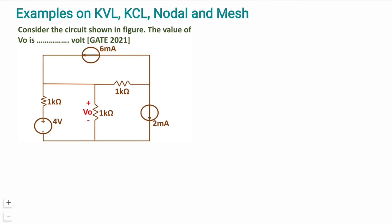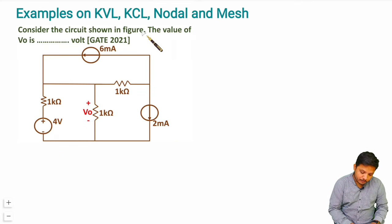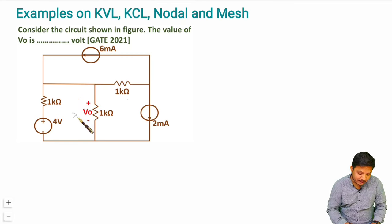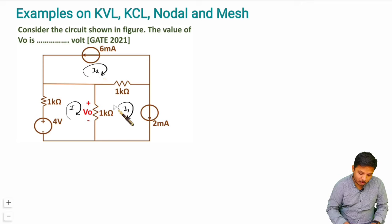So let us see the first question. We are dealing with a circuit and for this circuit we need to identify the value of V0, which is the voltage across the 1 kilo ohm resistor. If you observe this circuit, you will see that there are loops, and by solving those loops we can easily calculate V0. Let us consider three different loops — current I, current I1, and current I2 — all considered in the clockwise direction.